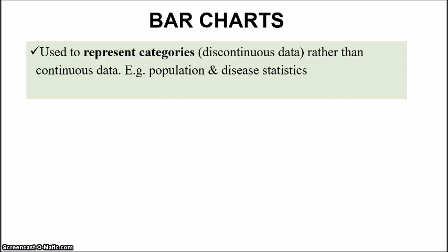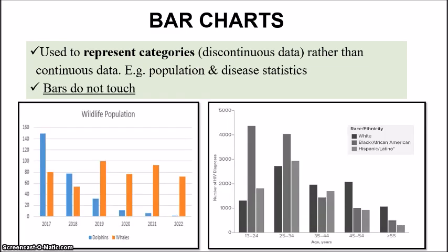Bar charts are used to represent categories — discontinuous data rather than continuous data. They're generally used to represent population information, disease statistics. Note that the bars do not touch within a bar chart — they're distinctly separated into categories. In the wildlife population bar chart shown, you can see the years and numbers of dolphins and whales; in the other chart based on race and ethnicity, you can see the distinct age categories.